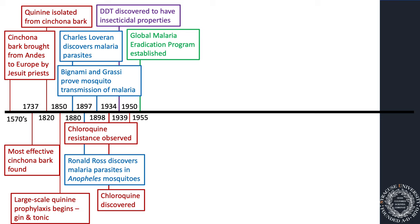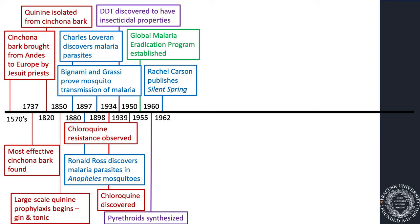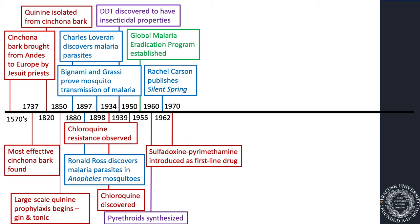Five years later, pyrethroids were synthesized — an insecticide derived from the chrysanthemum flower. Then in 1962, Rachel Carson published Silent Spring, a seminal work of science literature showing all the bad things that can happen if you dump insecticides in the environment. She proposed a future where no birds would be singing because all these insecticides were killing off birds, insects, and the environment. In 1972, DDT was banned in the U.S., a direct response to Silent Spring, and once banned, not many other countries were producing DDT at the same scale — it was basically lost as an intervention.